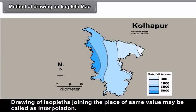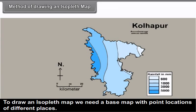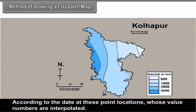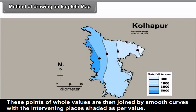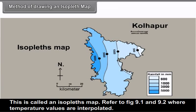Methods of Drawing an Isopleth Map: Drawing isopleth lines by joining places of the same value is called interpolation. To draw an isopleth map, we use a base map with point locations of different places. According to the data, at these point locations whose values are interpolated, points of whole values are then joined by smooth curves, with intervening places shaded as per the value. This is called an isopleth map. Refer to figures 9.1 and 9.2, where temperature values are interpolated.